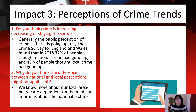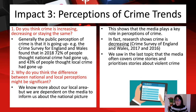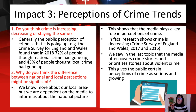This shows that the media plays a key role in perceptions of crime. In fact, research — from the 2017 Crime Survey — shows crime is actually decreasing. The media often covers and prioritises stories about violent crime, giving the public a perception of crime as serious and growing. Because newspapers are always full of violent crime stories, people think there are loads of them and they're increasing, when actually crime is going down.